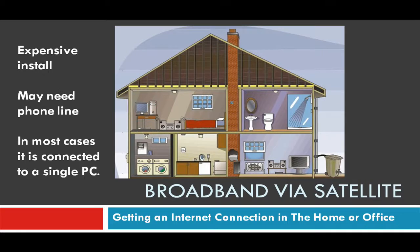If you go for broadband via satellite, be aware that it can be very expensive to install because there is a lot of equipment involved. You may also need a phone line — it's not just the satellite dish. In most cases it's connected to a single PC. The install results in a satellite dish connected somewhere near your home or office, wired into your computer, which then picks up a signal from satellites to enable you to access the internet.